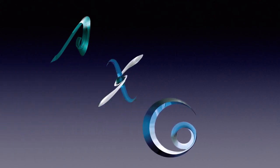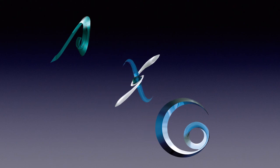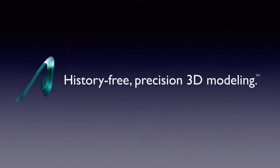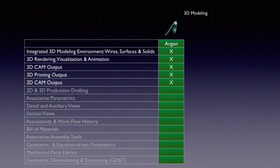Now let's talk about the differences in the 3D modeling products in our product line: Argon, Xenon, and Cobalt. Of our trio of 3D solid and surface modeling products, Argon is the little brother. It offers history-free precision 3D modeling. Argon provides excellent value, offering integrated wireframe, surface, and solid modeling design, brilliant 3D rendering visualization and animation, and 2D/3D output for CAM and 3D printing.